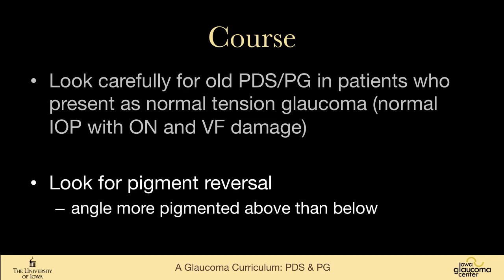One sign to look for is pigment reversal, where the angle is more pigmented above than below. Normally, gravity causes more pigment to settle inferiorly, but in these patients you can see reversal of that pattern — very little pigment in the inferior angle but a lot superiorly. This person had old pigmentary glaucoma presenting with cupping and field loss but normal pressure; the damage likely occurred when they were in their thirties.